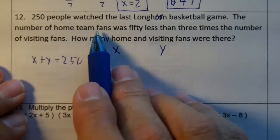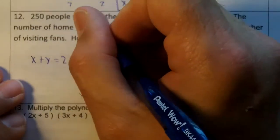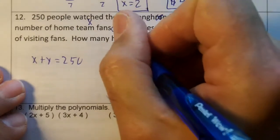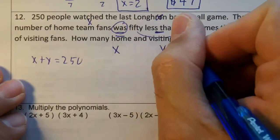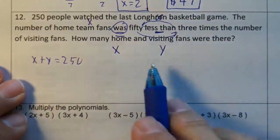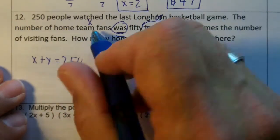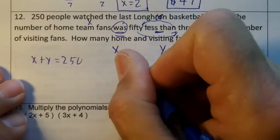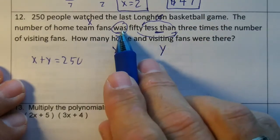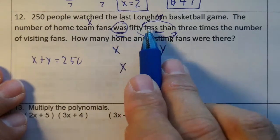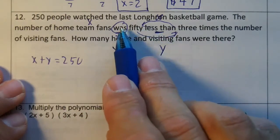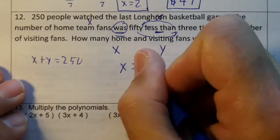The number of home fans, the home fans is X. Was is going to be our equals. Less than, you've got to flip these, don't you? So we're going to have the home team fans, so that's going to be X. You can replace your verb with equals. Home team fans equals 50 less than. So your verb is going to turn into your equal sign.